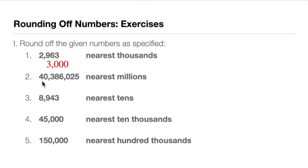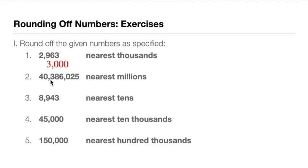Number 2: 40,386,025 rounded to the nearest millions. The millions place digit is 0. What matters is the digit to its right, which is 3. Since 3 is less than 5, we retain and round down. The answer becomes 40,000,000.